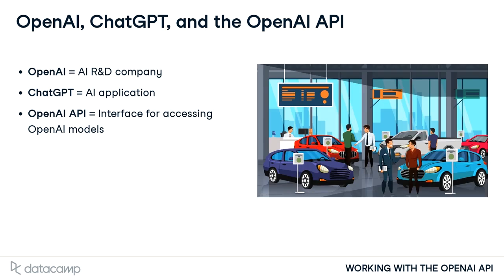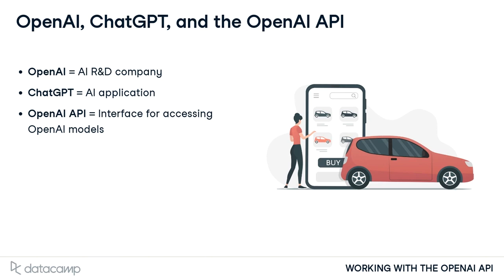If OpenAI was a car manufacturer, ChatGPT would be their shiny new sports car that people can walk into a dealership and test drive. The OpenAI API would be like the system customers could use to customize and order any car from the manufacturer's catalog.